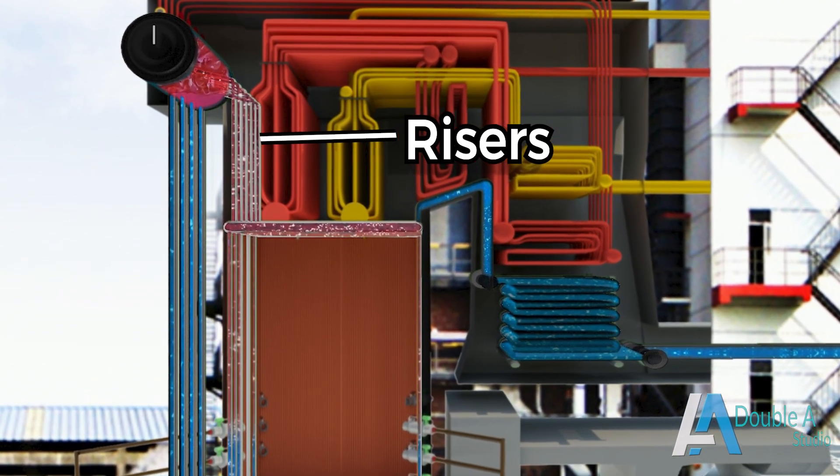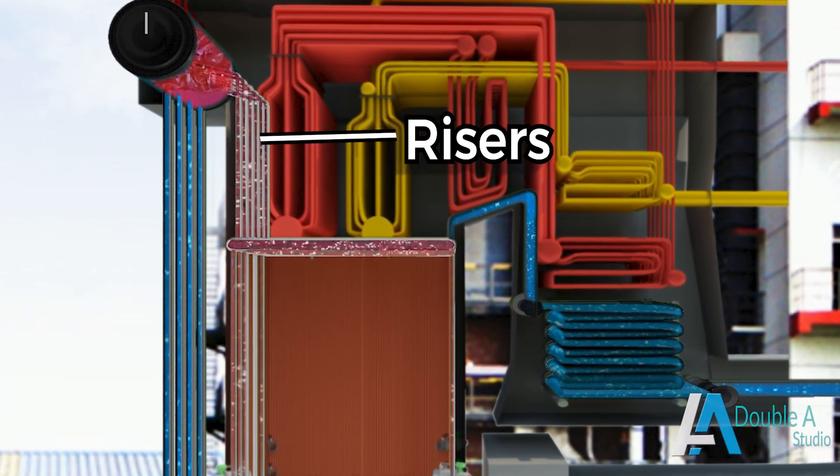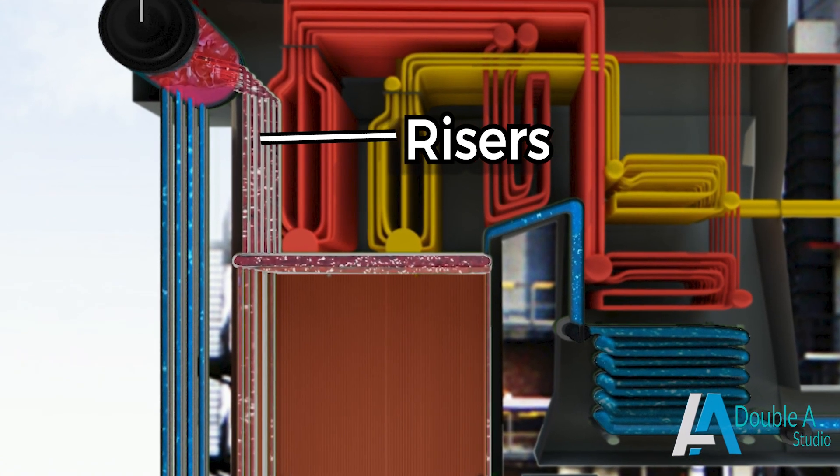Coming to risers, these are the tubes that connect the upper ring header to the boiler drum and send water-steam mixture to the boiler drum.